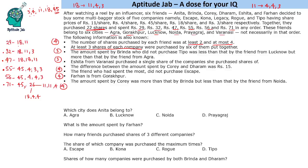Finally, we need to decide whether to split 18 or 11 into three parts. Either 18 will be split into three parts or 11 will be split into three parts. Let us read the further information and map these people to their cities and the prices they paid.